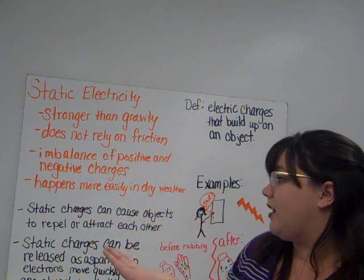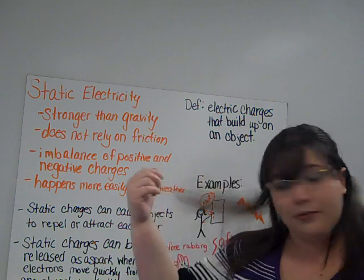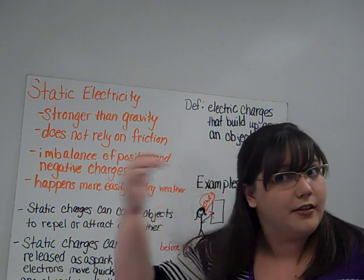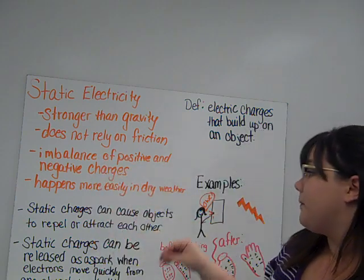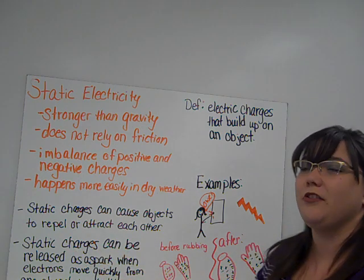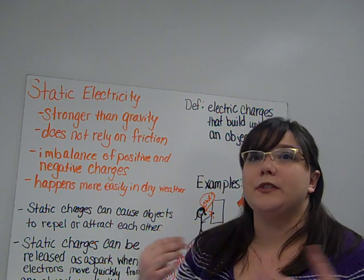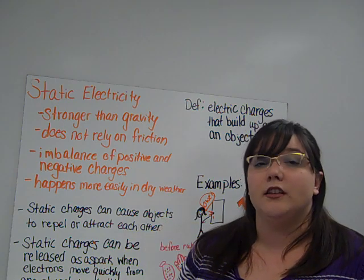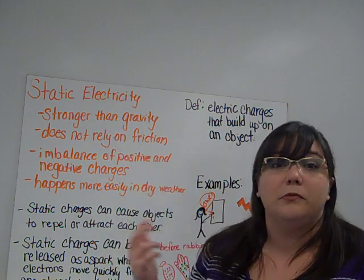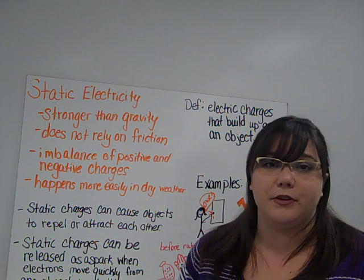Static charges can cause objects to repel or attract each other. We can take that balloon, rub it on something, pull it close to hair, and the hair would be full of static — it pulls it towards the object. Static charges can also be released as a spark when electrons move quickly from one object to another. You might see that when touching a door handle, or getting out of your car in winter wearing a fleece jacket — when you take it off, your hair stands up and the first thing you touch shocks you, because of that imbalance of positive and negative charges as electrons quickly jump to another area.